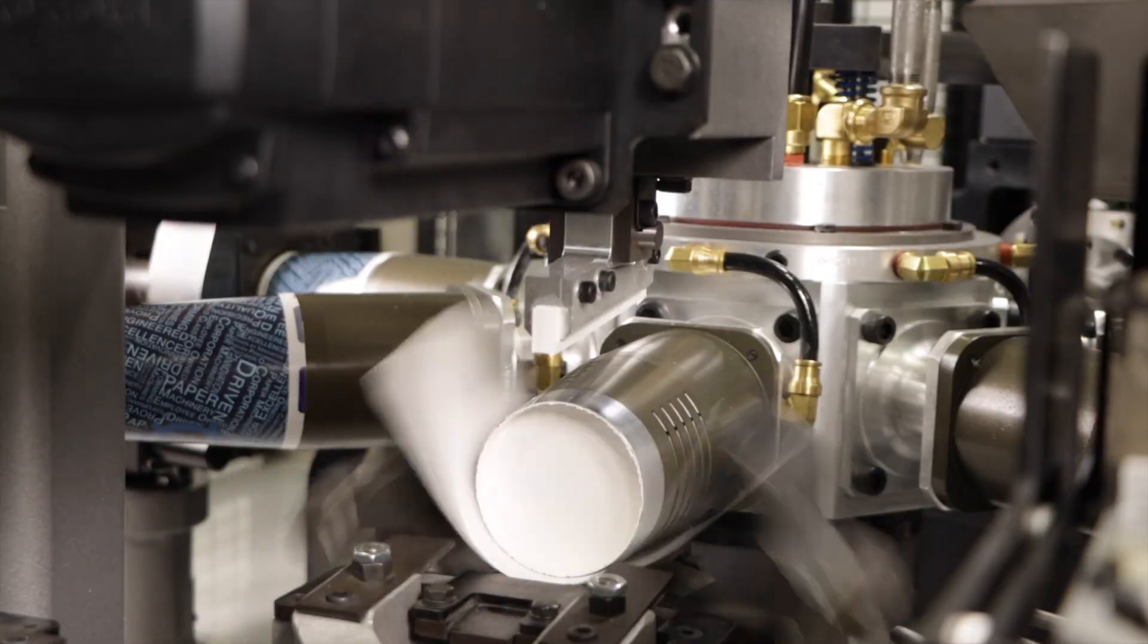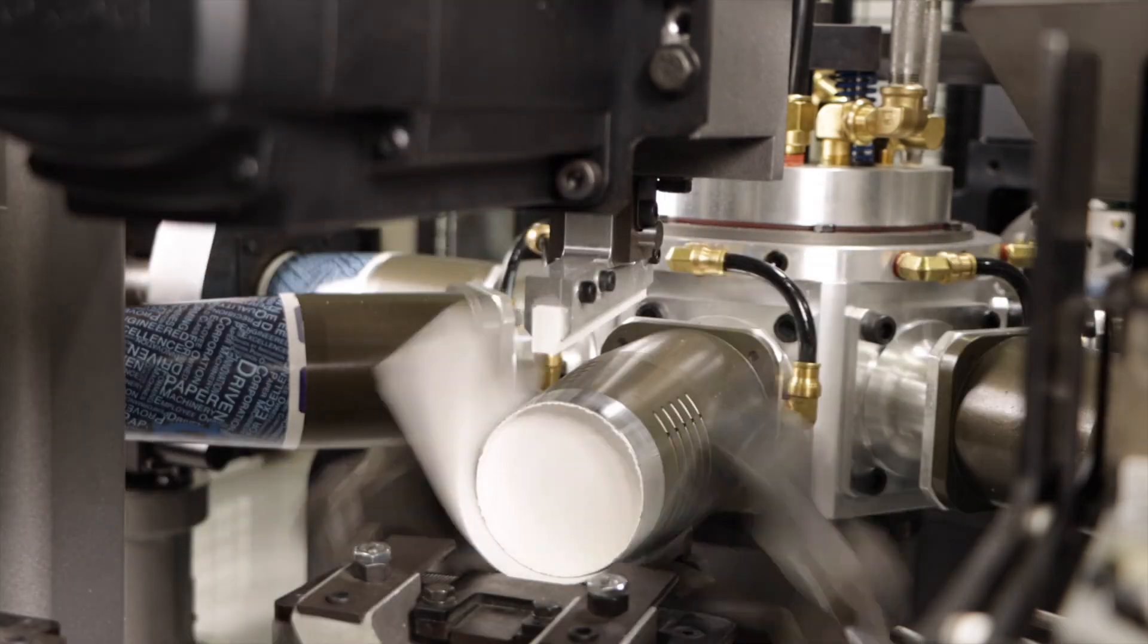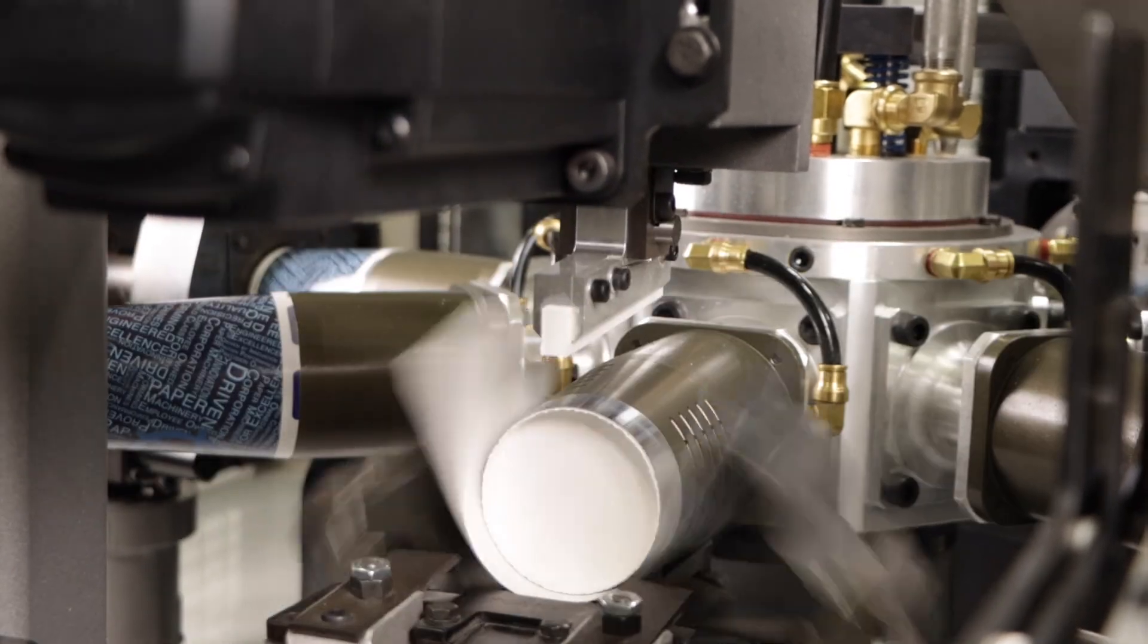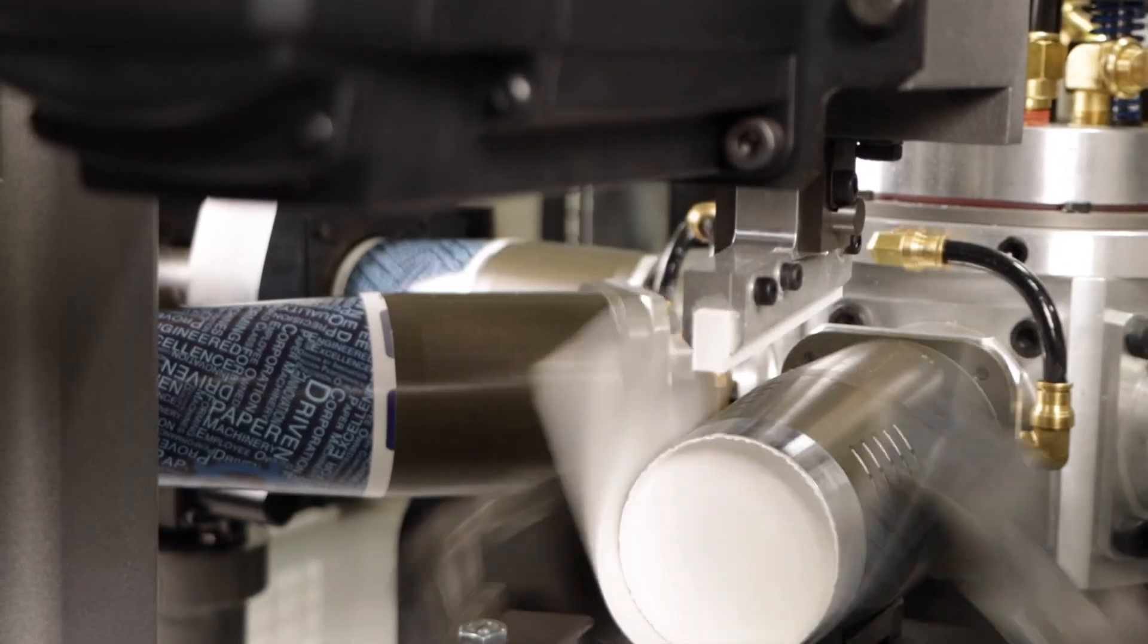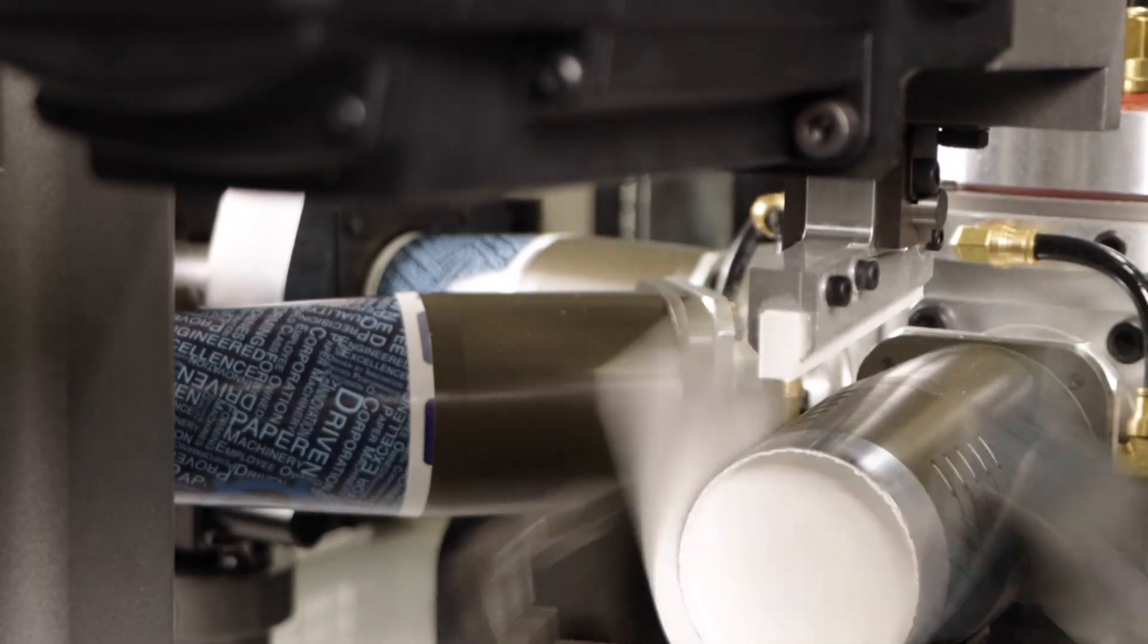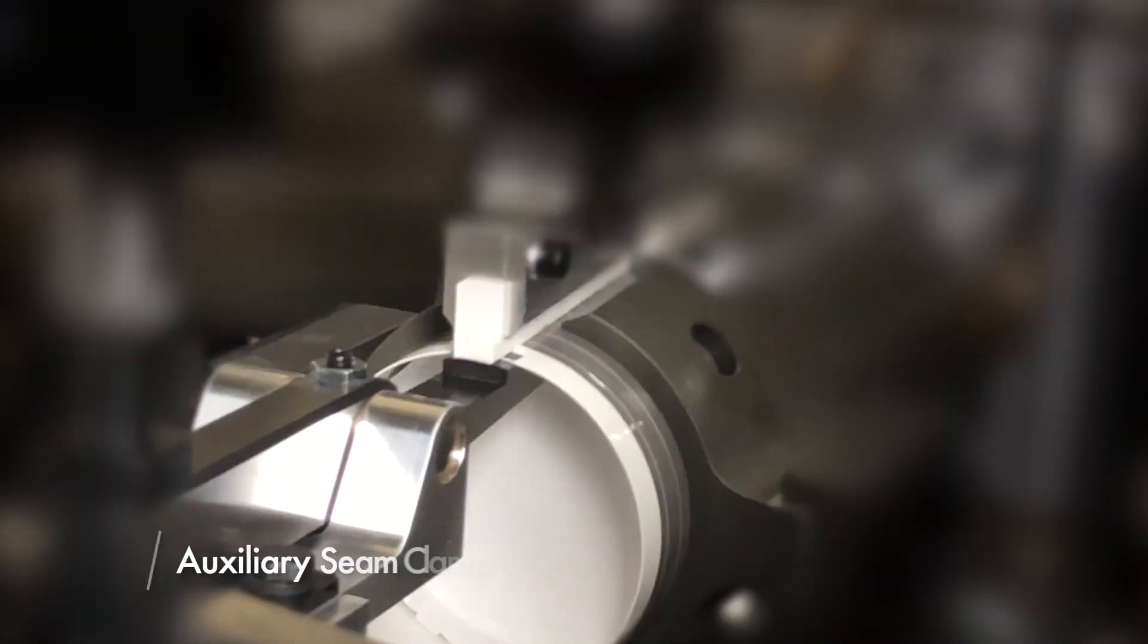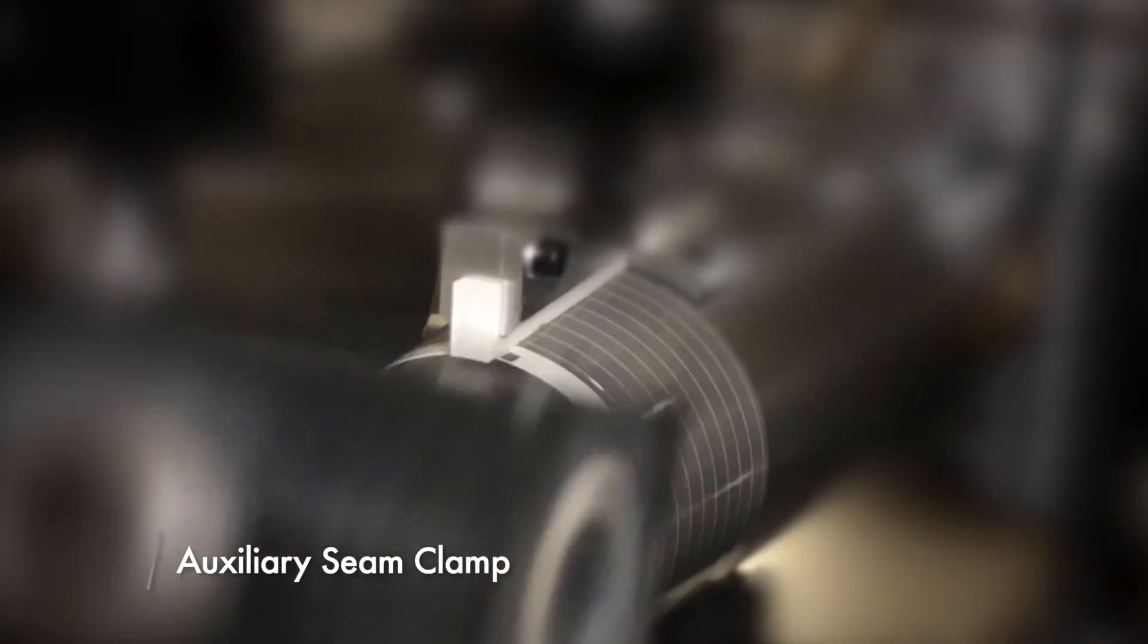The bottom blank moves to the folding station where the sidewall blank is wrapped around the mandrel and sealed by the seam clamp. The seam clamp releases as the mandrel indexes away from the folding wings. The wrapped sidewall remains firmly in place on the mandrel held by vacuum. An optional auxiliary seam clamp stabilizes the shell for more effective formation.